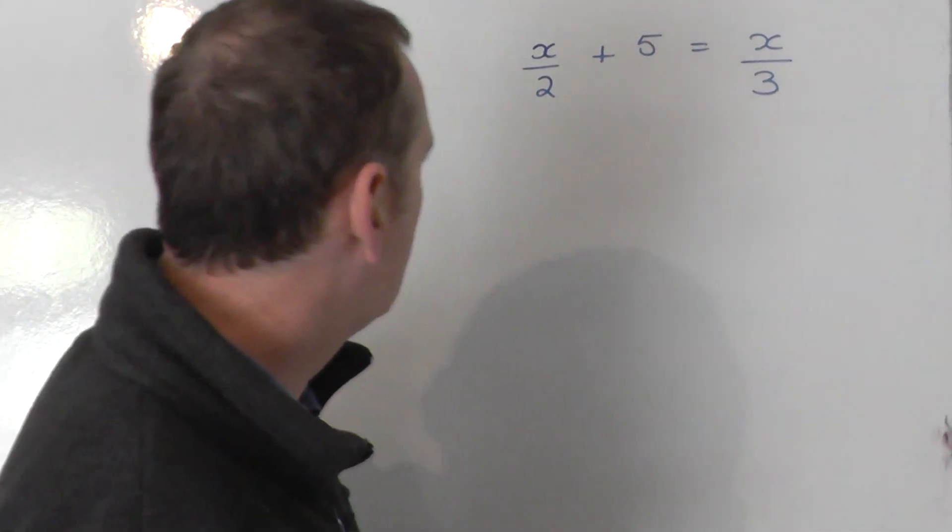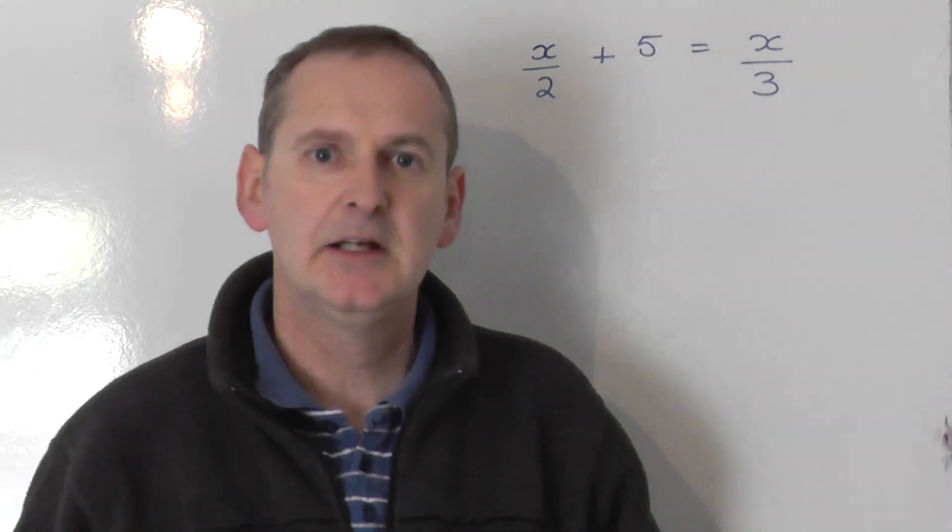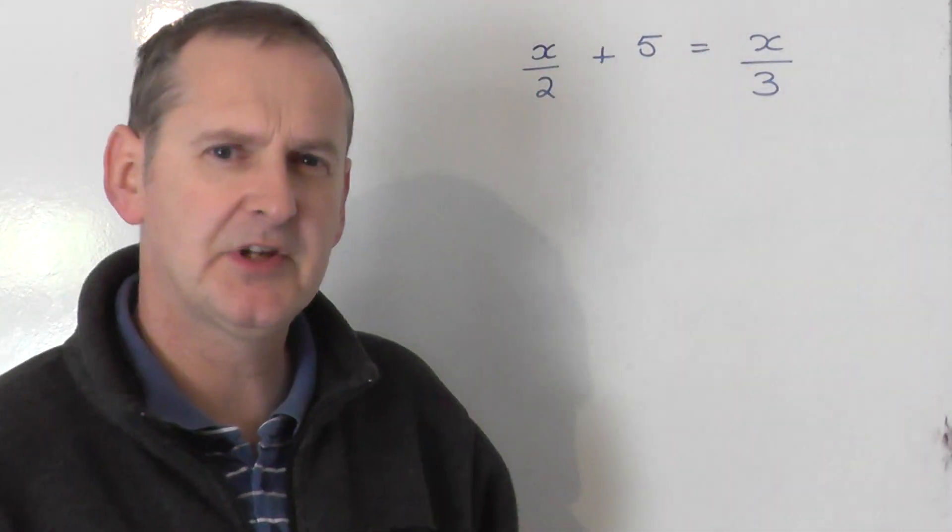Let's look at solving this equation: x over 2 plus 5 is equal to x over 3. Now this is an awkward equation because, as you can see,